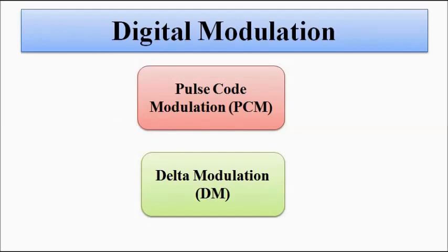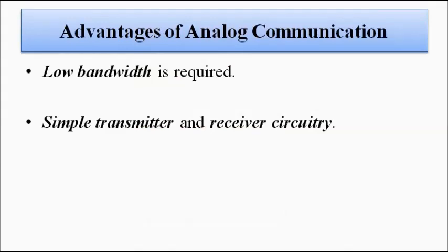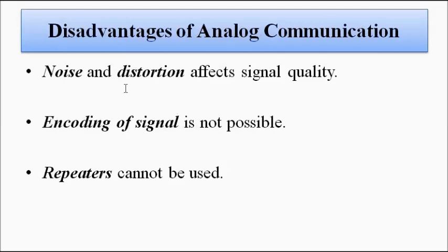There are certain advantages and disadvantages associated with both analog and digital communication. The advantages of analog communication are that low bandwidth is required and the circuitry at both transmitter and receiver sides is simple. The disadvantages are that noise and distortion are very high, encoding of the signal is not possible, and repeaters — amplifiers that strengthen the signal at various points — cannot be used.